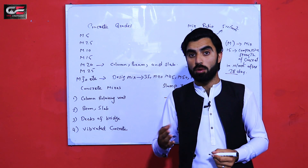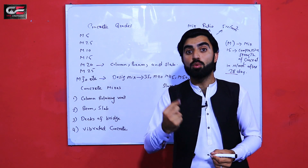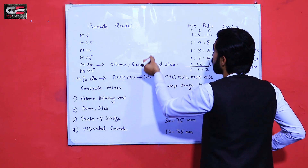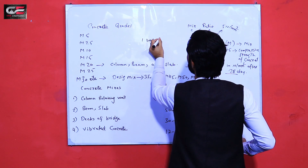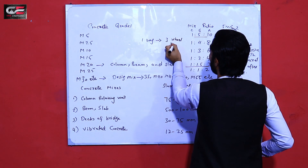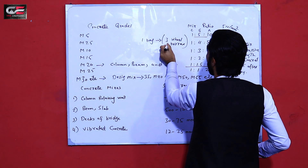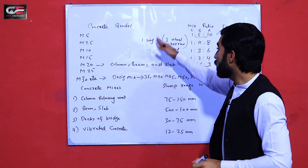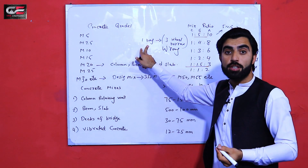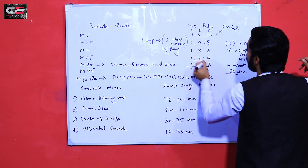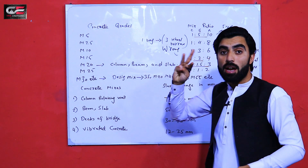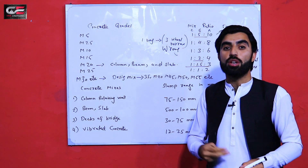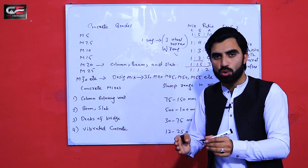Unfortunately in India and Pakistan, workers are using one bag of cement with three wheelbarrows — two of sand and one of crush — which is wrong. You cannot get full strength this way. From one 50 kg bag of cement with three wheelbarrows, what you're actually getting is roughly a 1:4 ratio, which is incorrect. You should not do this.